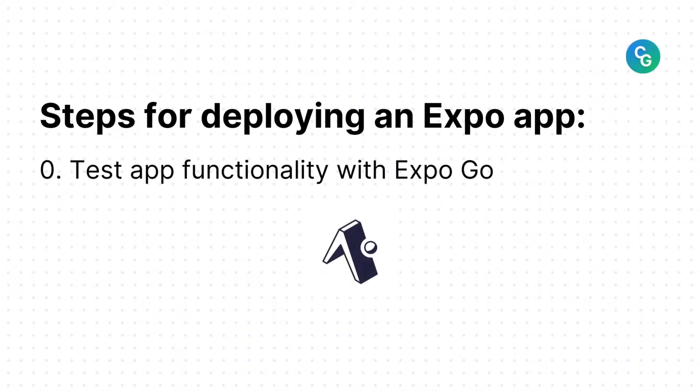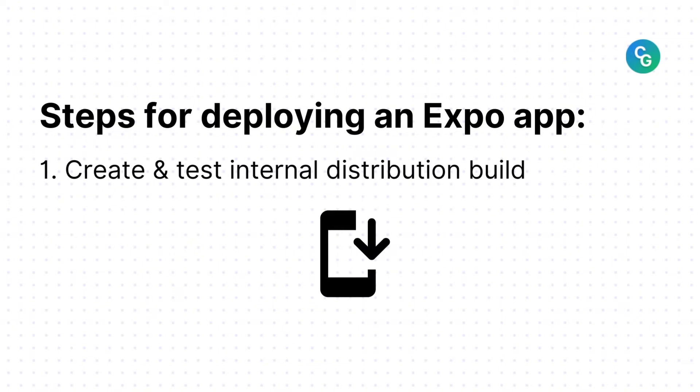Step zero: the first thing we want to do before anything else is to test the functionality of the app with Expo Go. Once we've confirmed it works as expected, we can move on. Step one is to create and test an internal distribution build. This will allow you to run your app on your own device without the constraints and limitations of the Expo Go app. You can test anything that requires native code or deeper integration with the device.